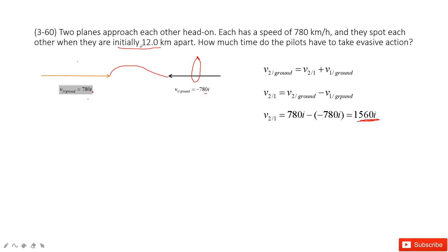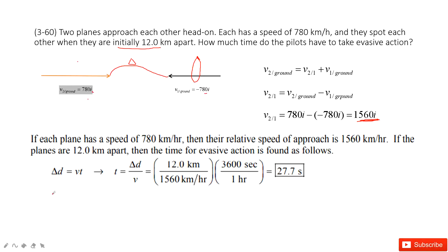We also know the initial distance is 12 km. So use this distance divided by velocity, we get the time taken. This is how we solve the problem.